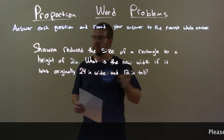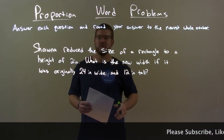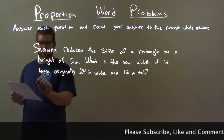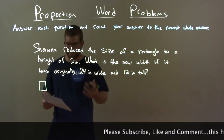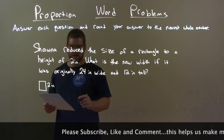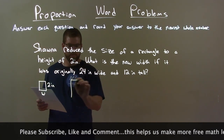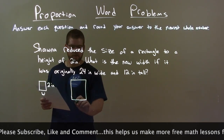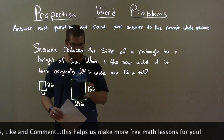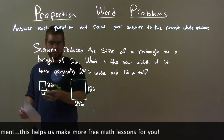Shawna reduced the size of a rectangle to a height of 2 inches. What is the new width if it was originally 24 inches wide and 12 inches tall? I like to draw pictures to start off with this. So we have a rectangle — Shawna reduced it to a height of 2 inches. We have a 2-inch height for this new rectangle. Our original rectangle was 24 inches wide and 12 inches tall. Our new one, proportionally, has a width we don't know but a height of 2 inches.